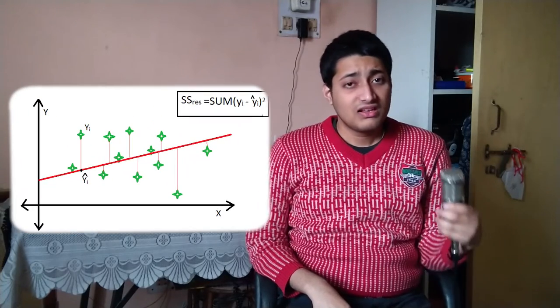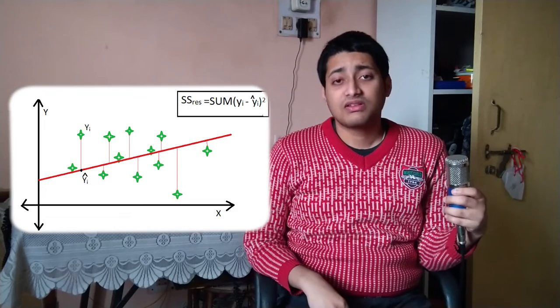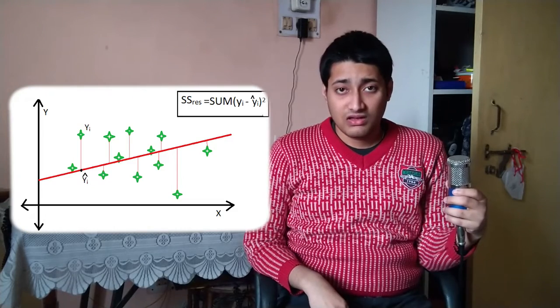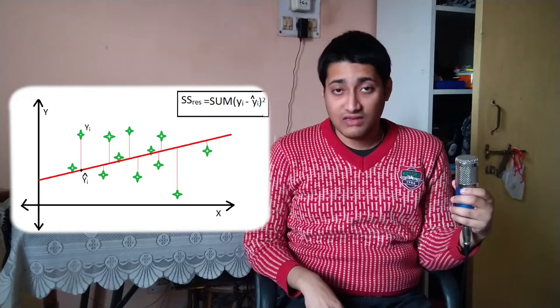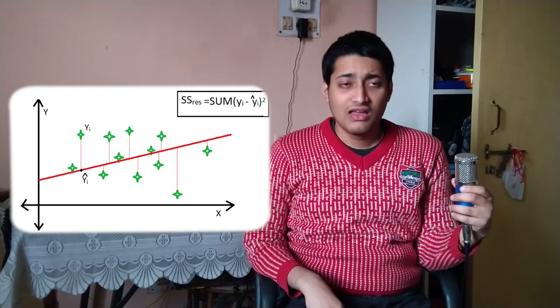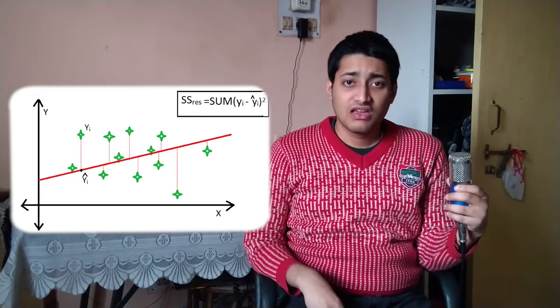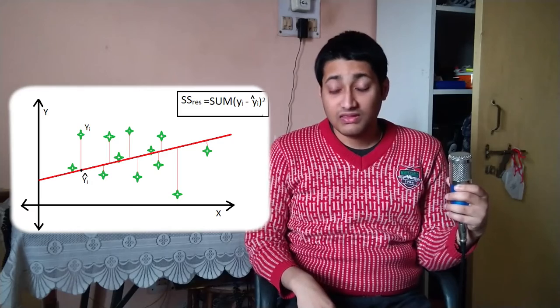So now we will look at how to test the robustness of the machine learning model. So for that we have a parameter which is called the r-squared value. So basically this is a parameter which can be used to predict the robustness of the model, and the higher the r-squared value, the better is the machine learning model.